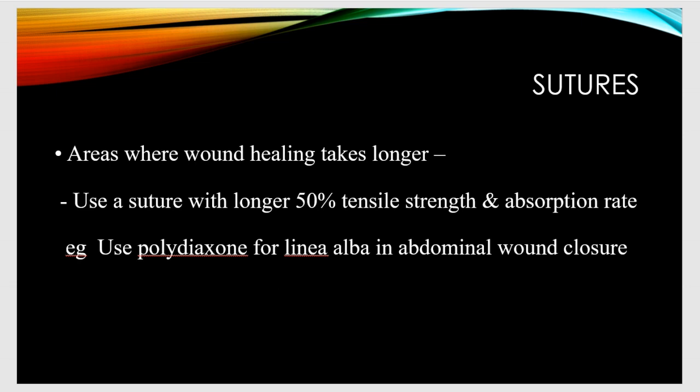In sites where wound healing takes longer, it is advisable to use a suture with a longer 50% tensile strength and absorption rate. For example, whenever closing an abdominal wound during an exploratory laparotomy, we are going to use polydioxone for linea alba closure.